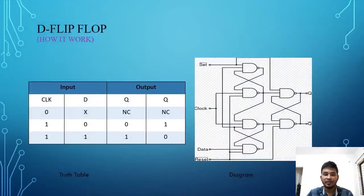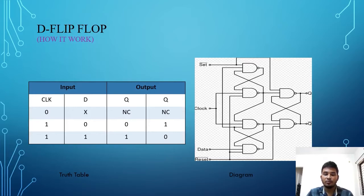The D flip-flop tracks the input, making transitions match those of the input D. The D stands for data. This flip-flop stores the value on the data line — it can be thought of as basic memory. A D flip-flop can be made from a set-reset flip-flop by connecting set and reset through an inverter. The output Q will track the input D so long as the flip-flop remains enabled. The D flip-flop tries to follow the input D but cannot make the required transition unless it is enabled by the clock.